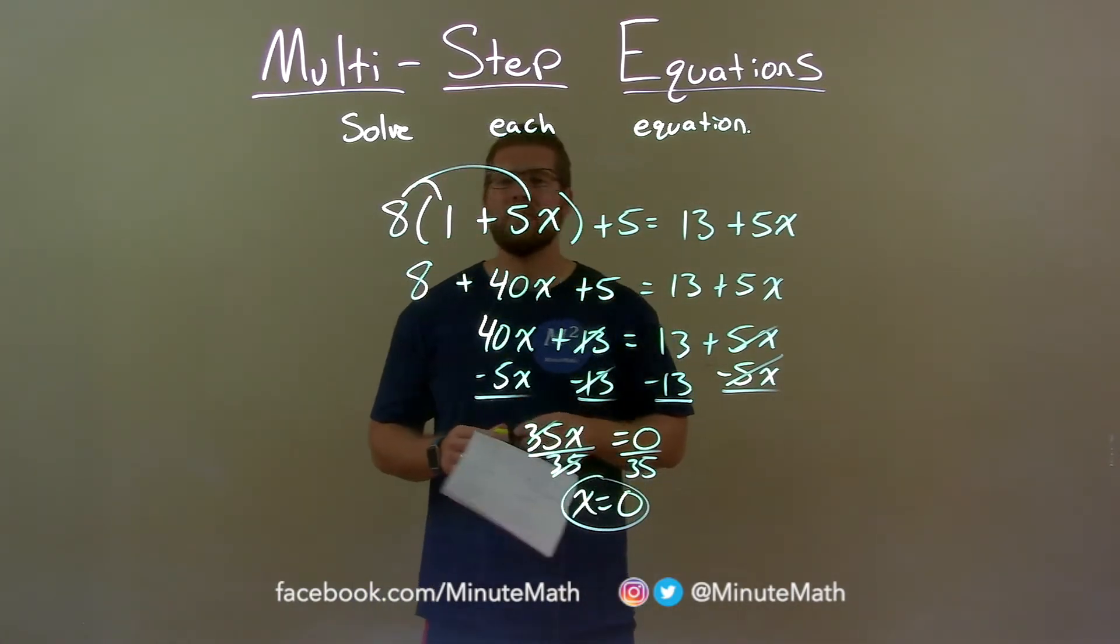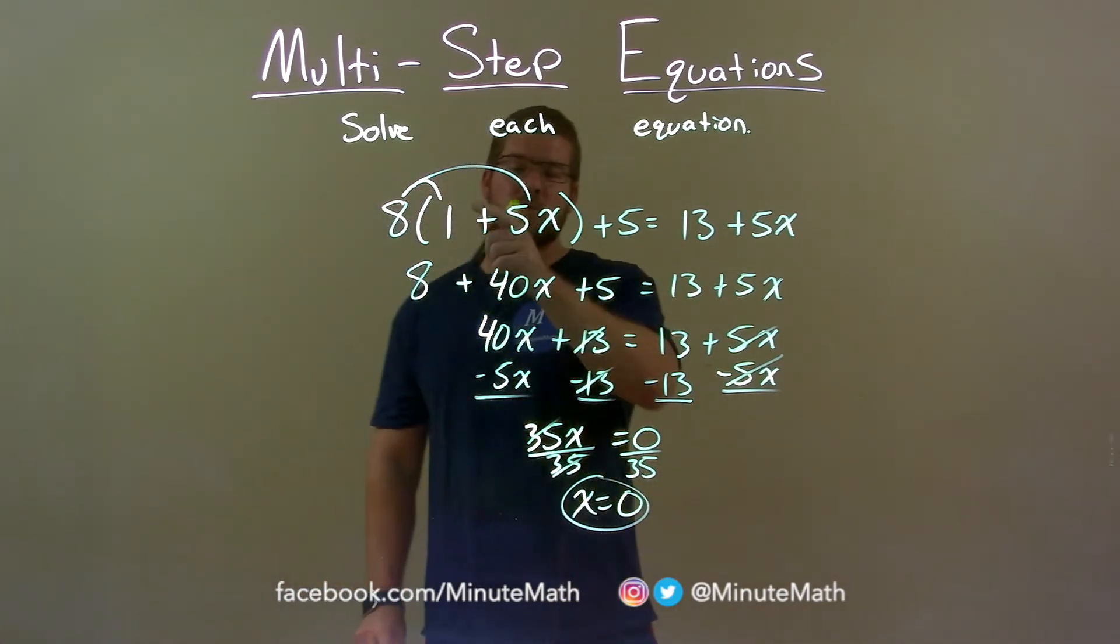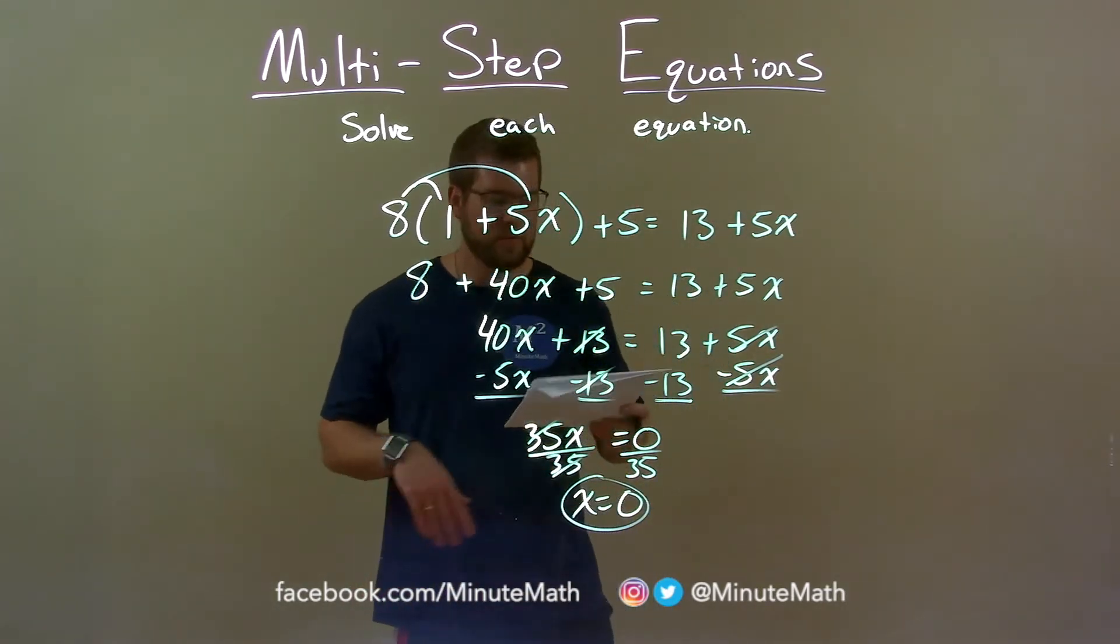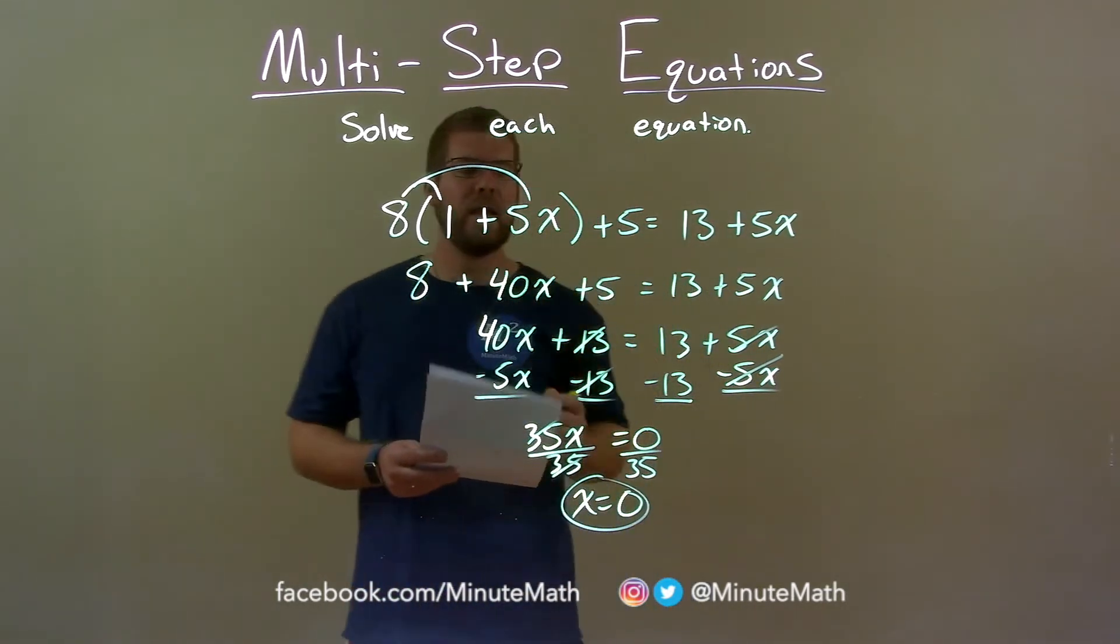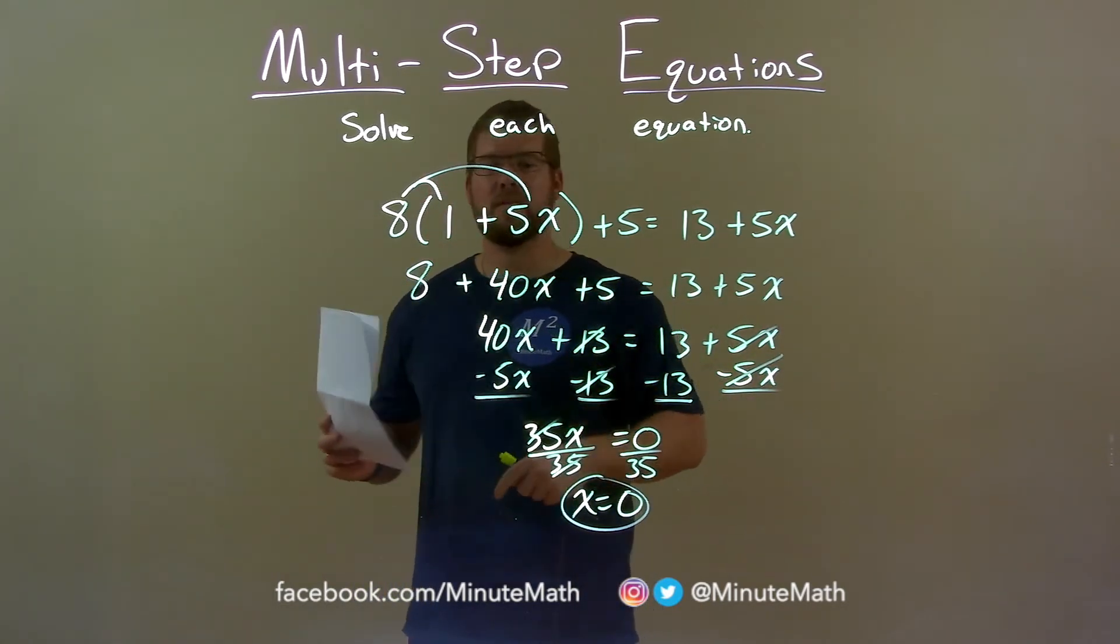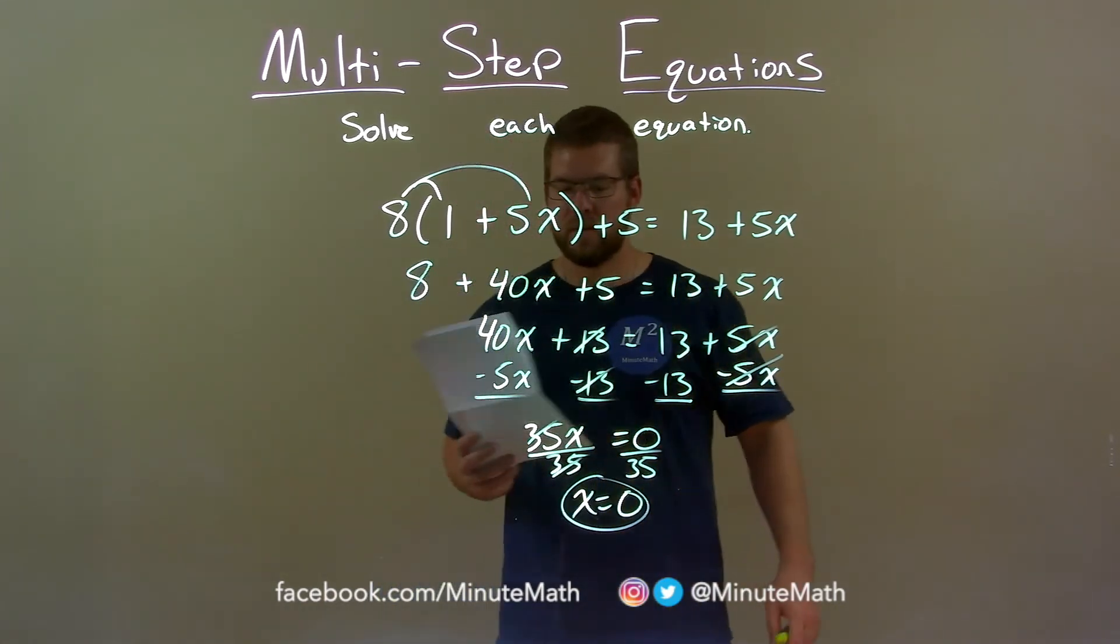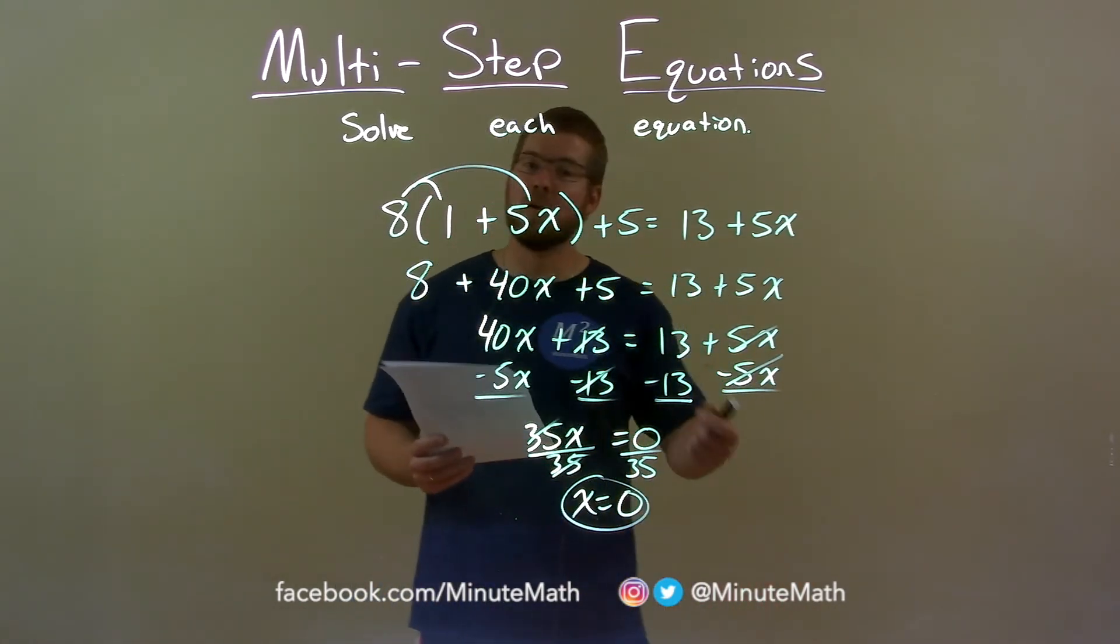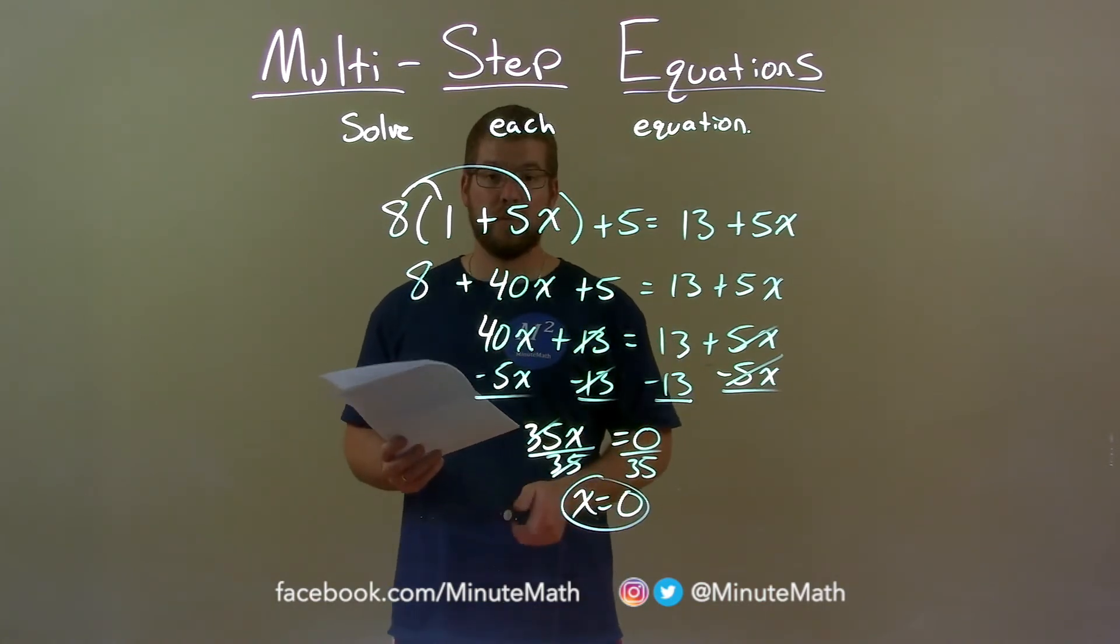Quick recap, we're given 8 times parentheses 1 plus 5x plus 5 equals 13 plus 5x and we have to solve for x. I distributed the 8, then I combined 8 and 5 together to get 13. Brought my like terms together by subtracting 5x to both sides and subtracting 13 to both sides. 35x now equals 0. Divide both sides by 35 and we got our final answer, x equals 0.